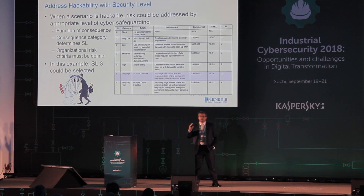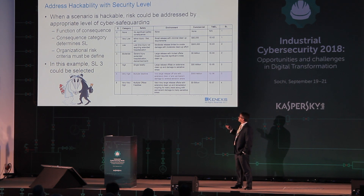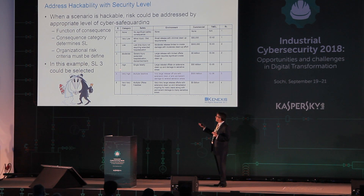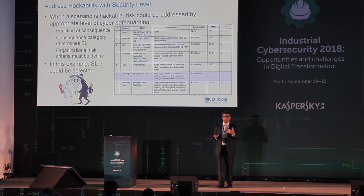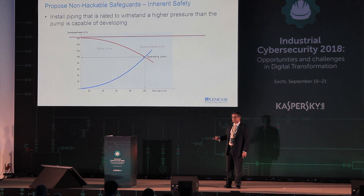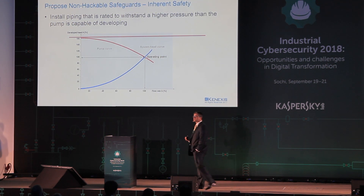We can use cybersecurity, and how much we need is a function of the consequence category. In this case, the consequence was multiple fatalities — high or very high. If that's the case, you need a very high security level to protect against that. The logic is: is it hackable? Yes or no. If it is, then what is the consequence? That defines your security level. In this case, we would pick security level three. But as a process engineer, I know that if I recommend SL 3, I've got the cybersecurity team trying to implement it. So what else can I do as a process engineer?